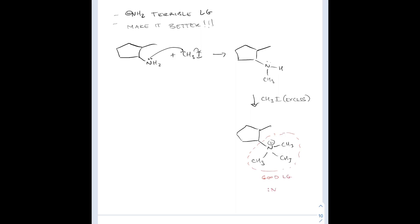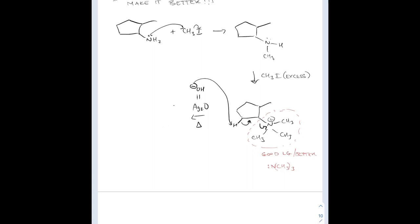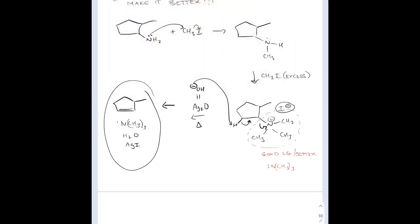Now that elimination reaction with a base doesn't look so bad. The choice of base is silver oxide, Ag2O — you can think of it like water bent in structure but with two silvers instead of hydrogens. This is essentially equivalent to a hydroxide. The silver oxide can attack a proton and create that pi bond, which forces the nitrogen out as a leaving group. So we form trimethylamine, water, and silver iodide — the iodide was the counter anion for the ammonium salt — and we form the alkene.